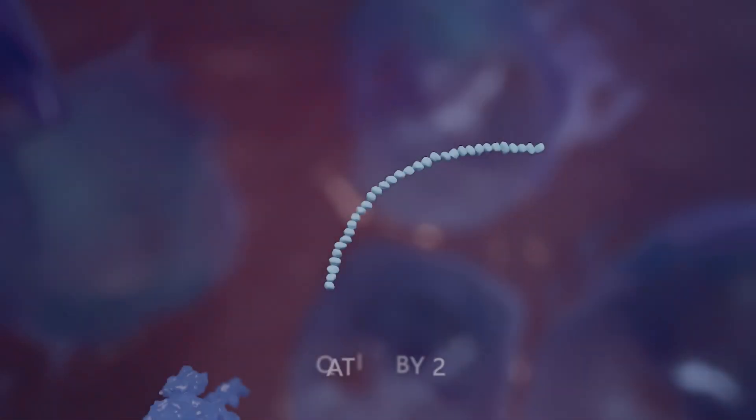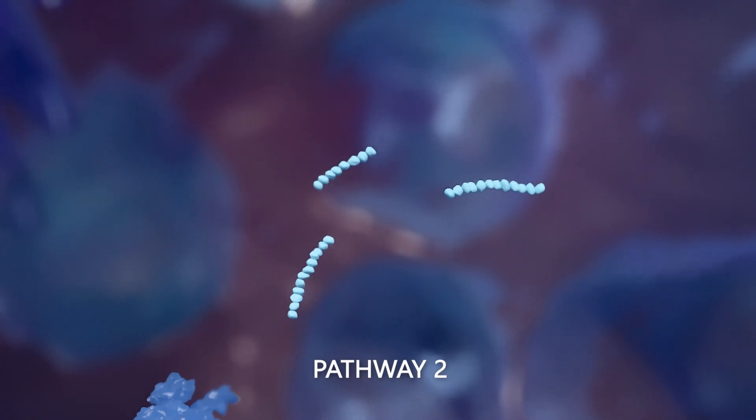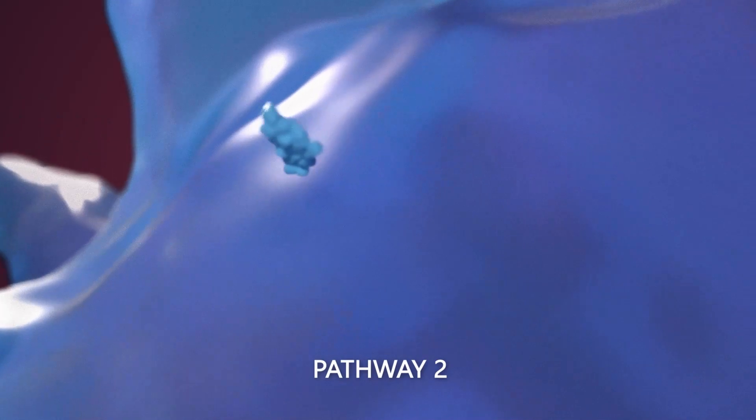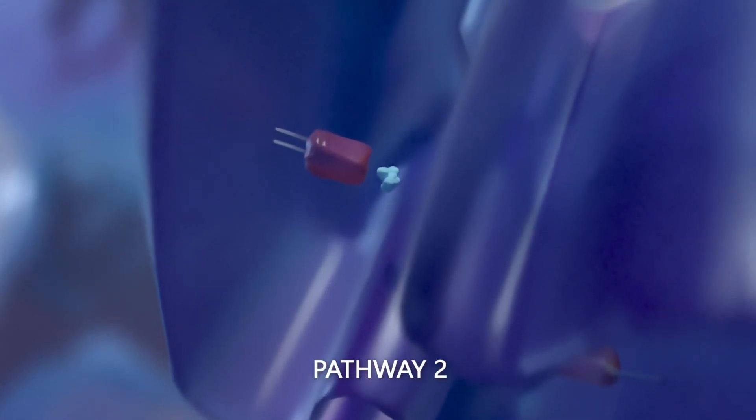In the second pathway, the spike protein or its fragments are transported to the surface of the cell, where it is released and is taken up by other antigen-presenting cells and degraded into fragments, which form a complex with an MHC2 protein.